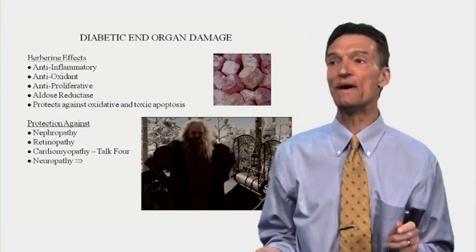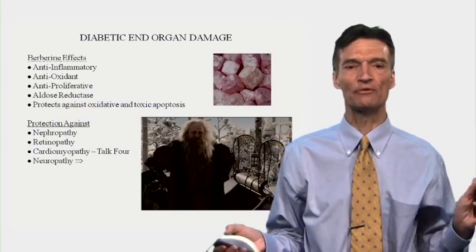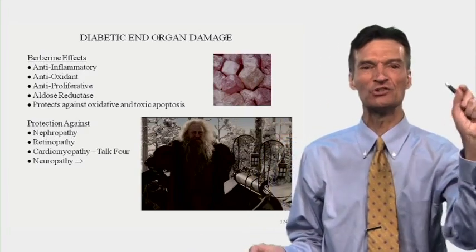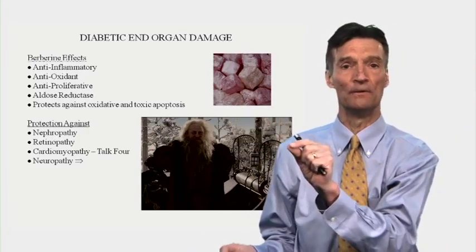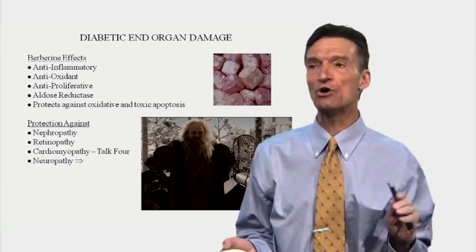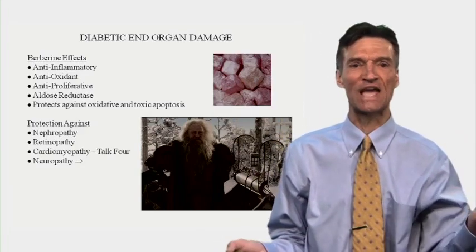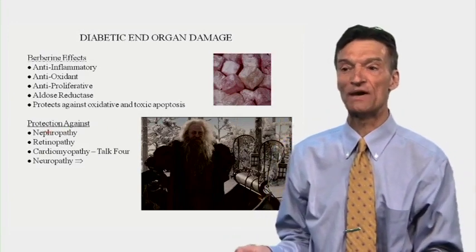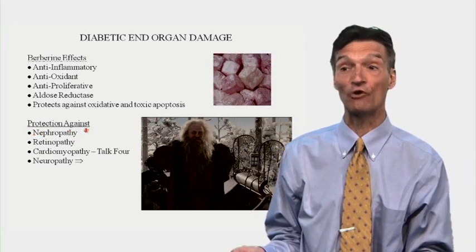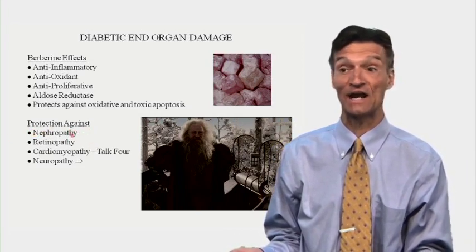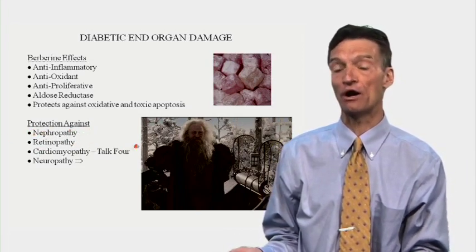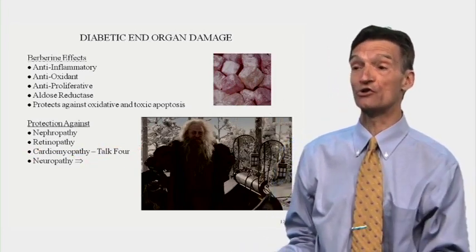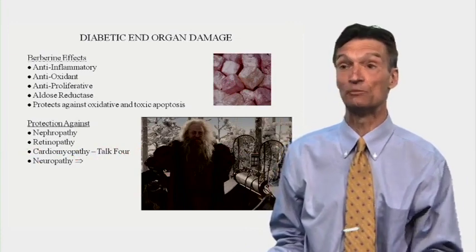Now let's talk about diabetic end-organ damage. We've talked about the beneficial effects of berberine in diabetes — we make more insulin receptors, intracellular insulin signaling is improved. In our prior presentation we discussed benefits of berberine in diabetic nephropathy and retinopathy — that's diabetic kidney and eye disease. In our next section we'll talk about diabetic cardiomyopathy. Here we'll talk about diabetic neuropathy.